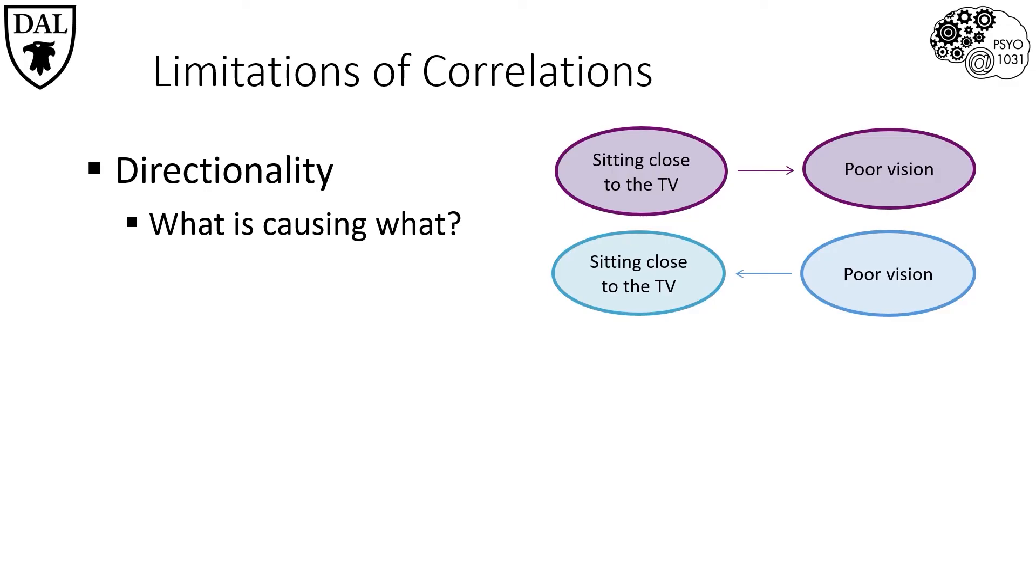Another reason why we can't determine causality from correlation is the third variable problem, which presents the possibility that the cause could be something else entirely. What if actually sitting too close to the television and poor vision are both being caused by a third variable that wasn't measured or in some cases not even realized?